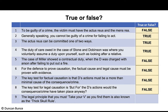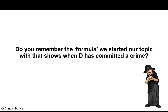The key test for legal causation is 'but for the defendant's actions, would the consequence have taken place anyway?' — that is false, because the 'but for' test is for factual causation. The legal cause must be more than minimal. The thin skull rule — also known as the eggshell rule, not the thick skull rule — is the principle that you must take your victim as you find them.